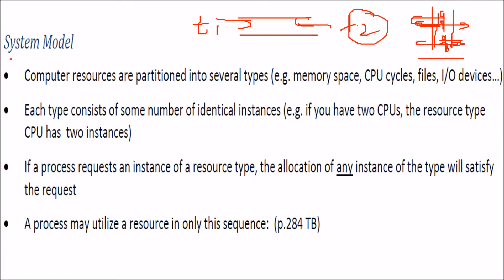Before we go ahead with deadlock, let us understand the system model. Deadlock is essentially related with resources. Computer resources are of different types, partitioned into several types like memory space, CPU cycles, files, and input/output devices. There can be one printer or multiple printers, one CPU or multiple CPUs. Each type consists of some number of identical instances — if you have two CPUs, the resource type CPU has two instances.